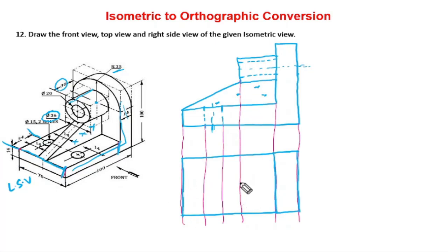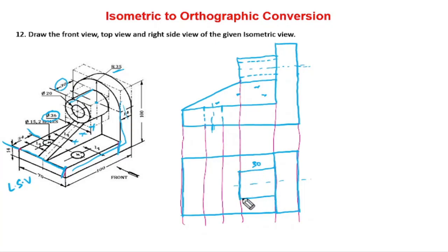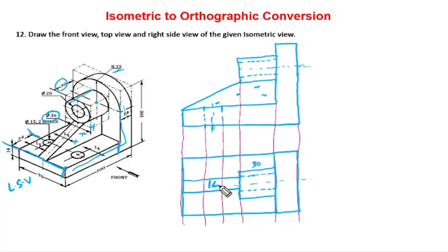This is a rectangle block. Regarding the bigger and smaller circles, we are supposed to draw the center. From here we have 18mm, then 30mm, and this is 30mm. So 5 plus 18 plus 18 gives a total of 36. We have a rectangle — a 10mm rectangle. The inclined block will appear like a reduced block. The thickness of this block is 14mm.